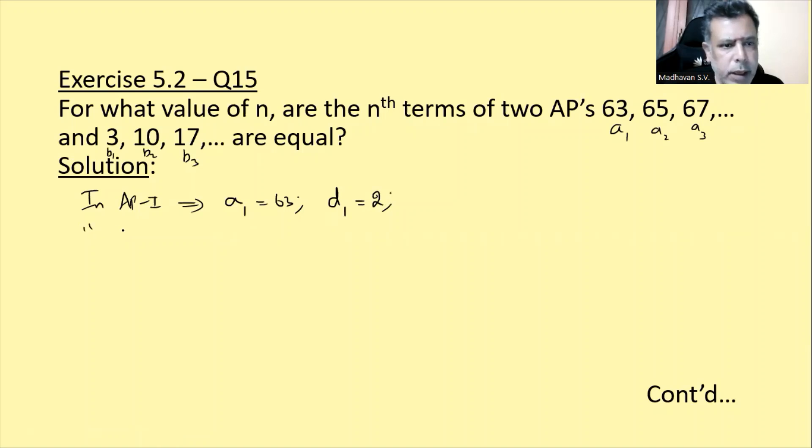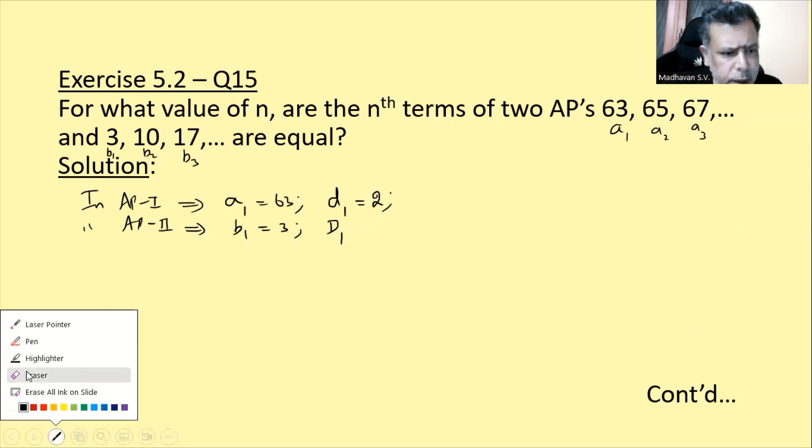So, in AP2, the first term B1 is 3, and the common difference D2 maan karke chalte. Yaha pe common difference notice karke, 10 minus 3 is 7, 17 minus 10 is 7. So common difference is 7.